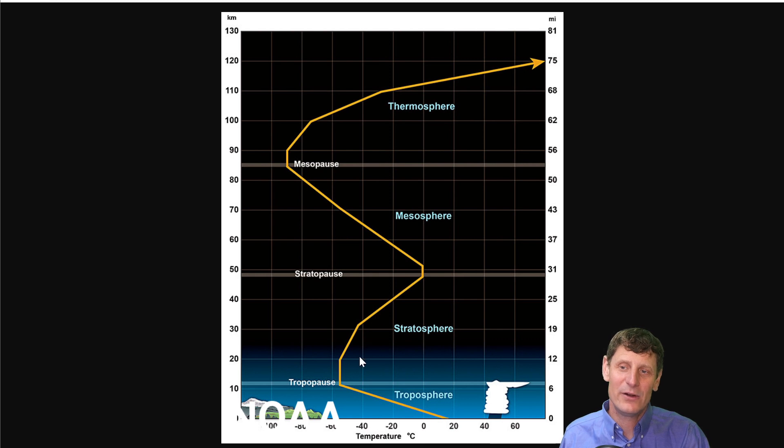Now the stratosphere we can tell is heated from the top, not from the bottom. In particular, this is from the absorption of some frequencies of ultraviolet radiation. The stratosphere has a protective function where it protects the Earth effectively from too much UV. It would be too much for us anyway if we didn't have this protective layer.